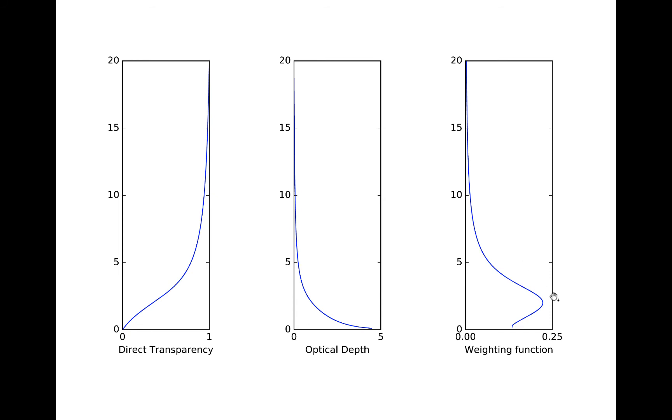The weighting function is shown at far right and is the vertical derivative in pressure coordinates of the direct transmittance. Thus, it will peak in magnitude where the direct transparency changes the most. This happens at around 2 kilometers altitude in this example. The weighting function tells us that radiation that would reach the satellite comes from mostly between the surface and 5 kilometers, although a little bit of radiation comes from higher altitudes, since the direct transmittance does not go quickly to 1 at high altitude.